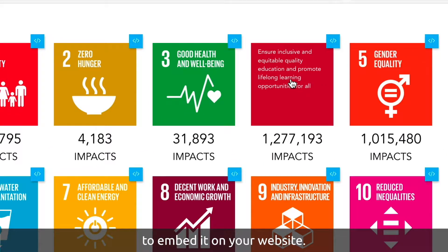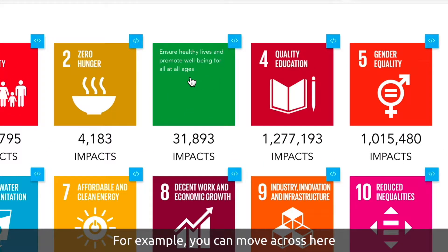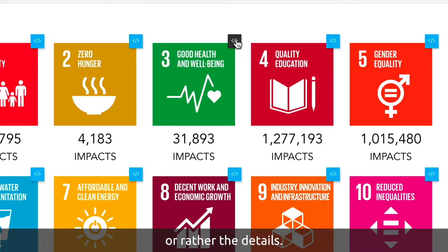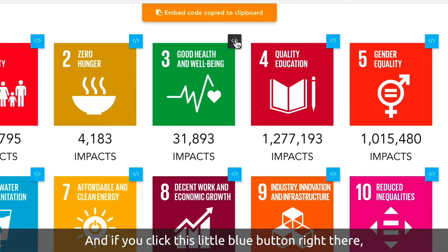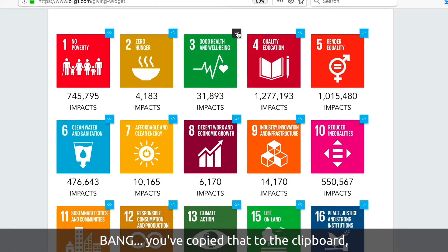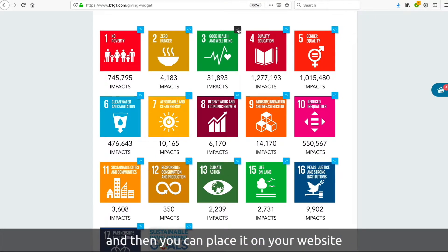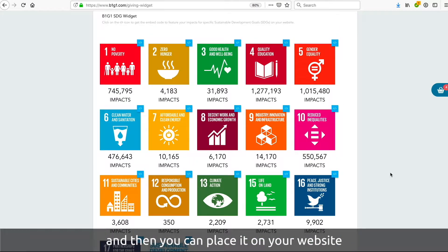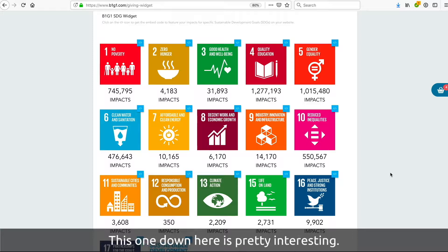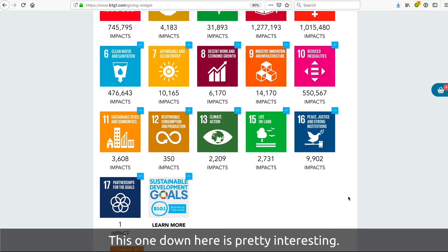To embed it on your website, for example, you can move across here and have a look at the titles of the SDGs — or rather the detail — and then if you click this little blue button right there, bang, you've copied that to the clipboard and you can paste it on your website in whatever way you like.